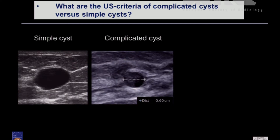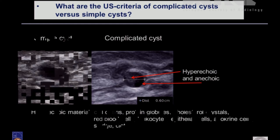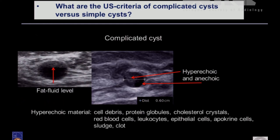Now, the complicated cyst. Why is the cyst complicated compared with the simple cyst? You see there is some hyperechogenicity inside the cystic lesion and maybe an anechoic part as well, so both parts may be visible. What can this hyperechogenicity be? It can be cell debris, protein globules, cholesterol crystals, red blood cells, lycosides, epithelial cells, apocrine cell sludge, or clot.